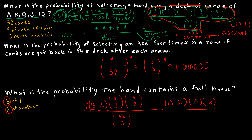So the numerator is P(13,2) × C(4,3) × C(4,2), which is 13 × 12 × 4 × 6 = 3,744. Dividing by 2,598,960 gives approximately 0.0014 as the probability of a full house.